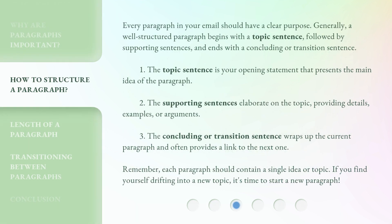Every paragraph in your email should have a clear purpose. Generally, a well-structured paragraph begins with a topic sentence, followed by supporting sentences, and ends with a concluding or transition sentence. The topic sentence is your opening statement that presents the main idea of the paragraph. The supporting sentences elaborate on the topic, providing details, examples, or arguments. The concluding or transition sentence wraps up the current paragraph and often provides a link to the next one. Remember, each paragraph should contain a single idea or topic. If you find yourself drifting into a new topic, it's time to start a new paragraph.